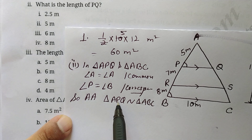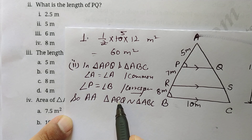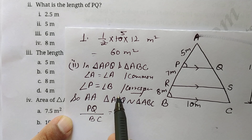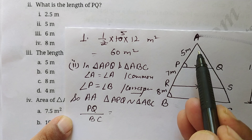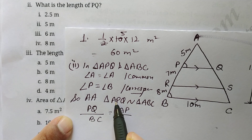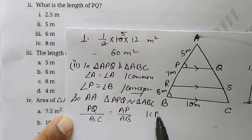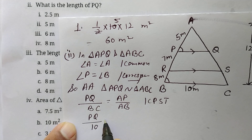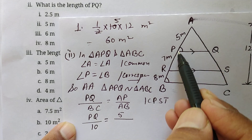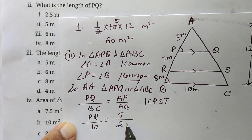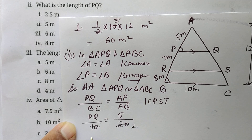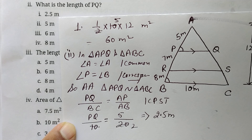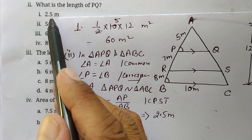Taking the ratio: PQ over BC equals AP over AB. PQ we need to find, BC is 10 meters, AP is 5 meters, and AB is 5 plus 7 plus 8 equals 20. So PQ over 10 equals 5 over 20, giving PQ equals 5 over 2, which is 2.5 meters. So the first option is correct: the length of PQ is 2.5 meters.